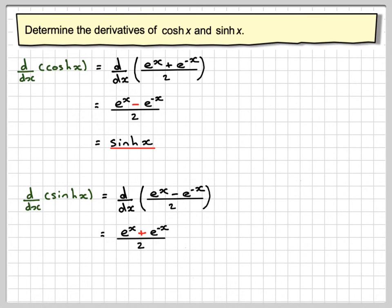So you can now gather what's happened. And if you differentiate sinh x, you actually get cosh x.